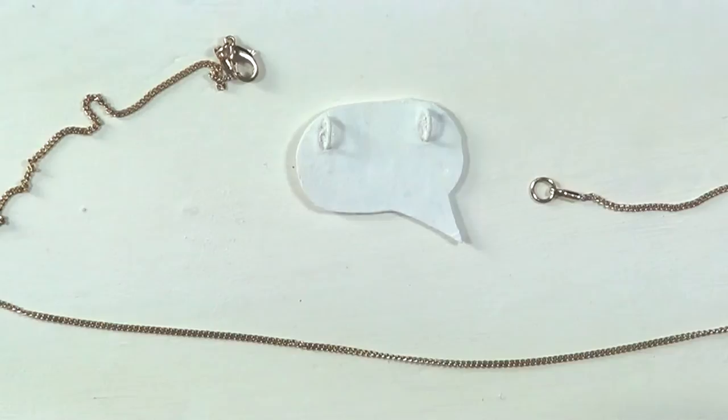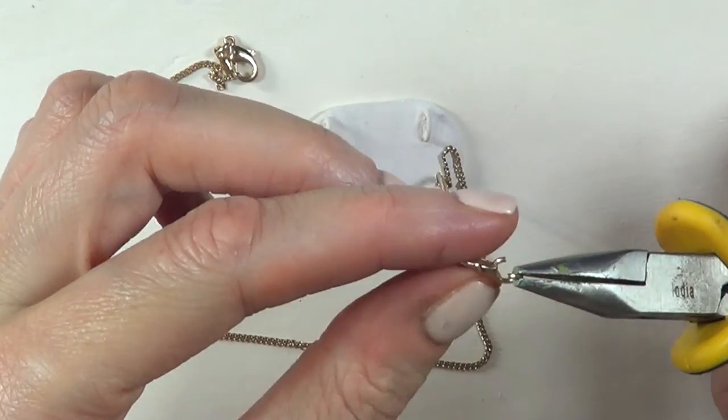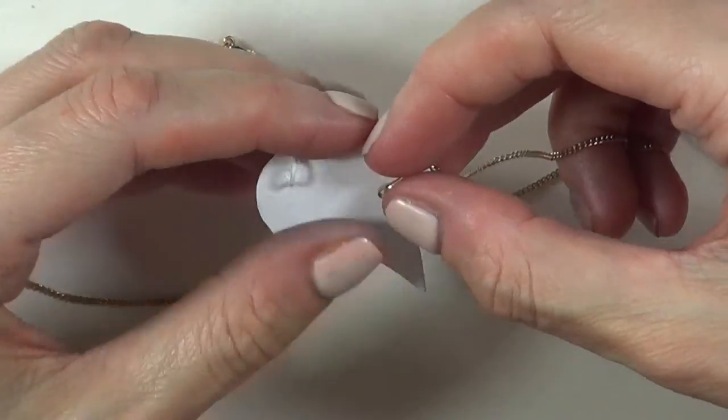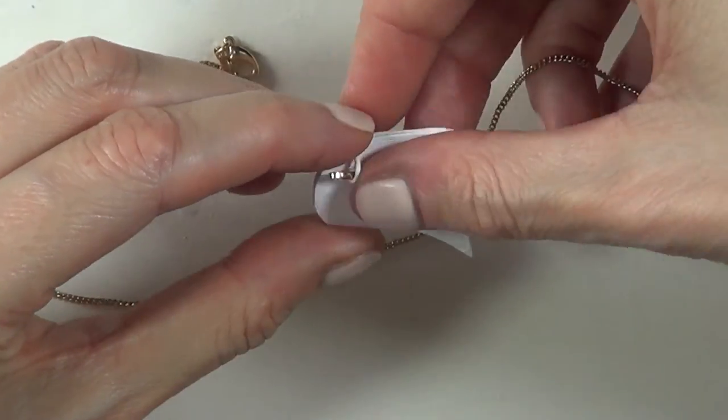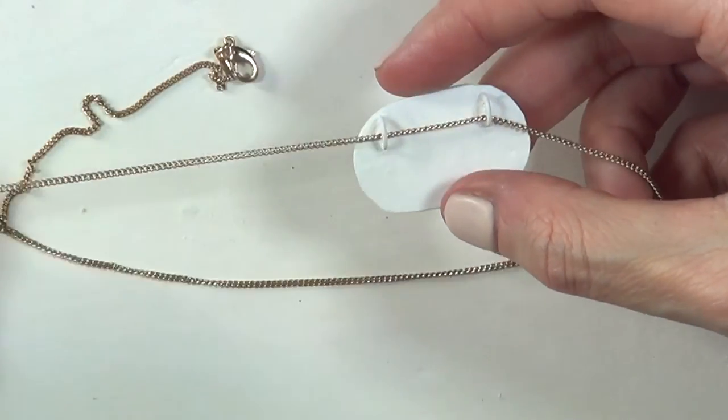I'm going to be using this necklace that is ready to go, but I'm going to be removing the jump ring that it has with my pliers, and then my chain goes through that, and I did place the jump ring again.